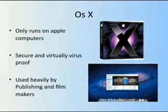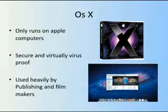OS X is Apple's version. This only runs on Apple computers and hardware. This makes it very fast and efficient because it doesn't have to handle anything when it's not there. It's based around an old industrial server system called Unix, which makes it incredibly secure and virtually virus-proof. I believe there have only been two viruses for it ever. When they first appeared, they were heavily used by desktop publishing and film companies, and this has continued — filmmakers now also use them widely, along with photographers.